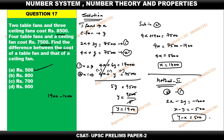So both methods give us 500. Method 2 is the simplest way to find the difference directly. If you need to find the individual values of x and y, then Method 1 is the proper approach. Hope you all understood. Thank you, have a good day.